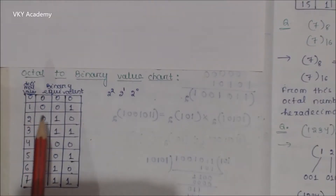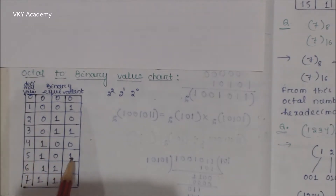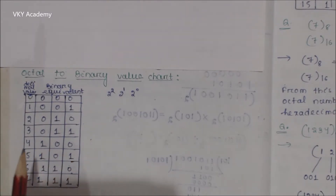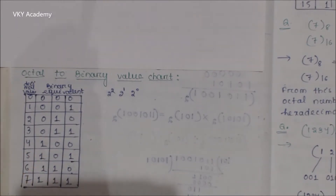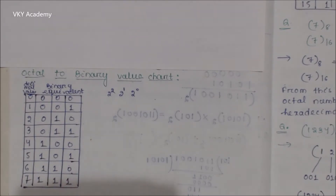Hello everyone. In the previous lecture we have seen how a decimal number can be converted to a binary number or a binary number can be converted to a decimal number. In this lecture we will see the representation of octal number system, representation of hexadecimal number system, how to convert an octal number system into binary number system, and how to convert a hexadecimal number system into a binary number system and vice versa.